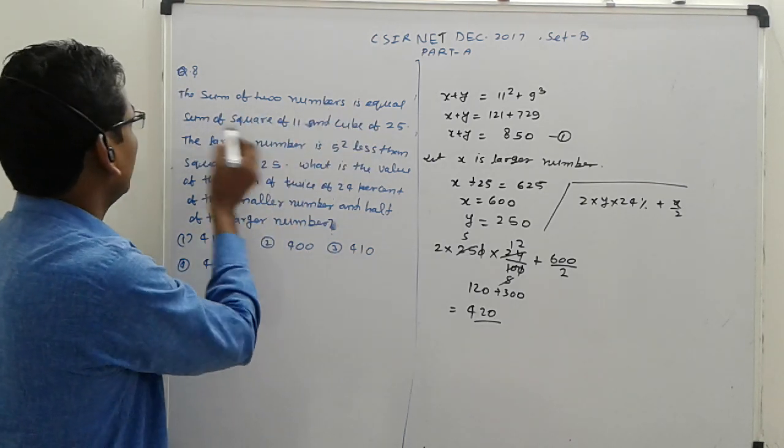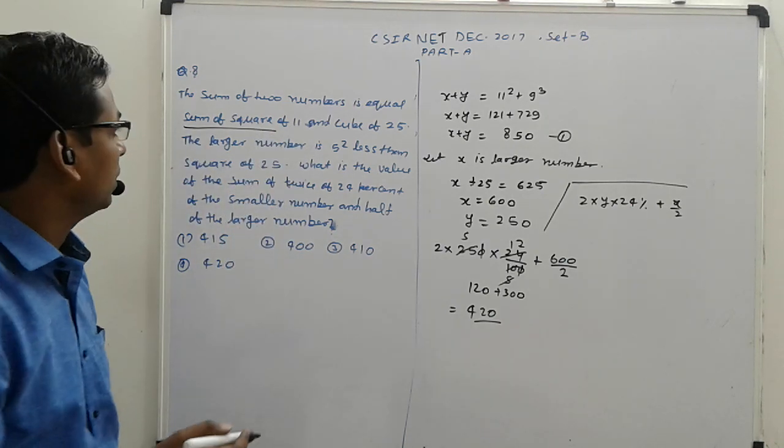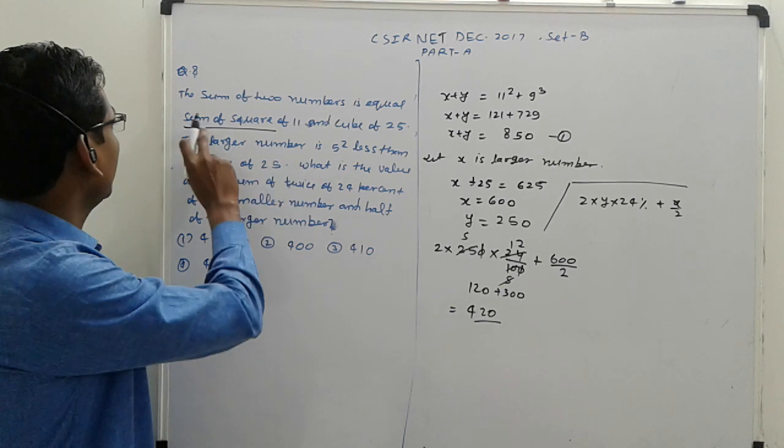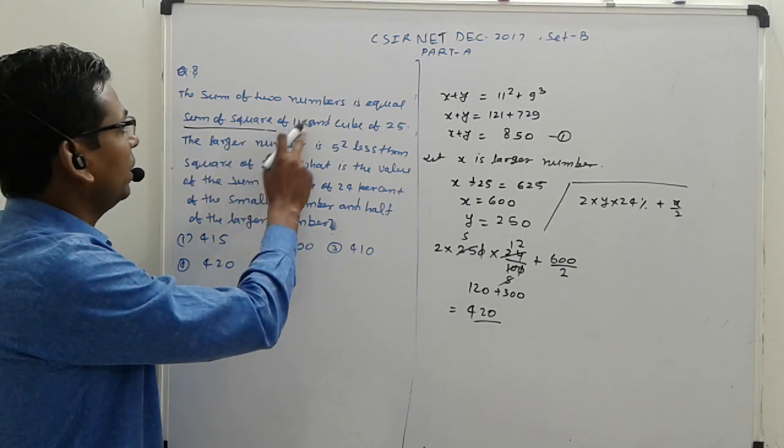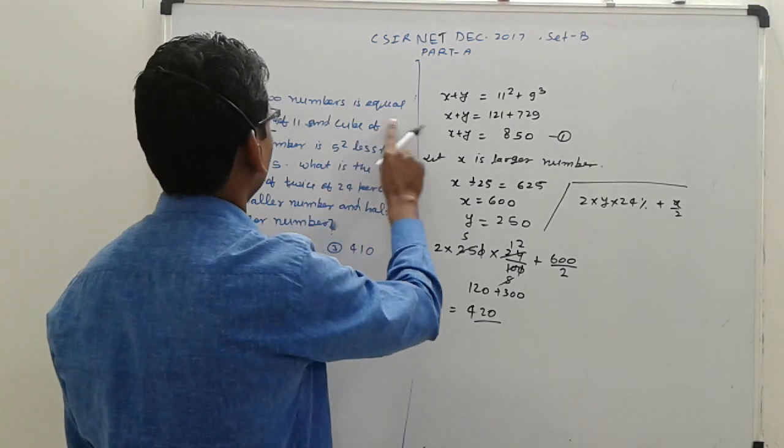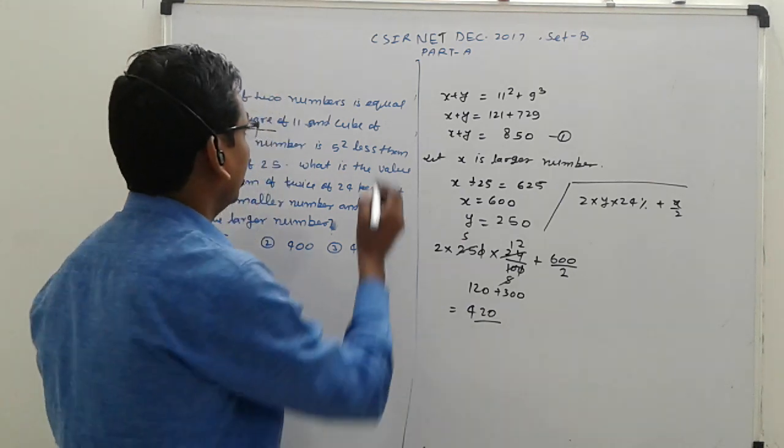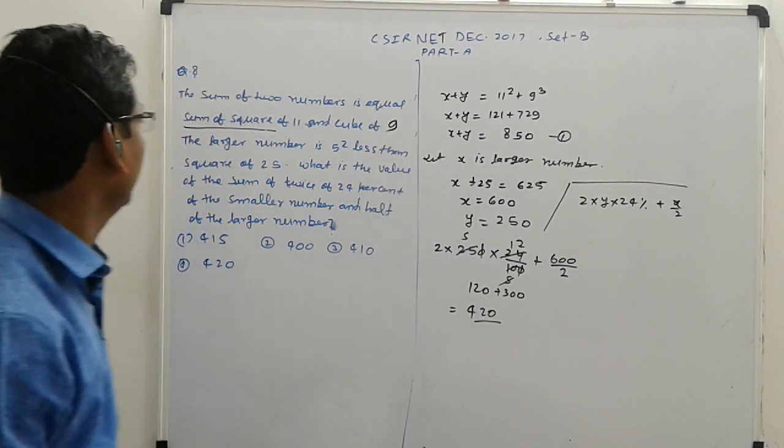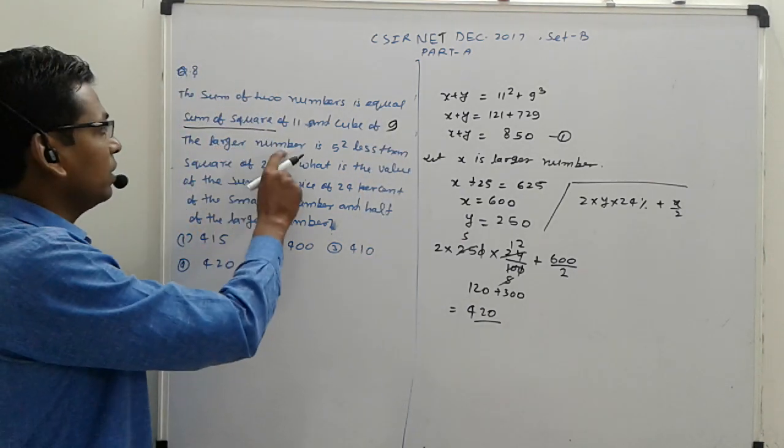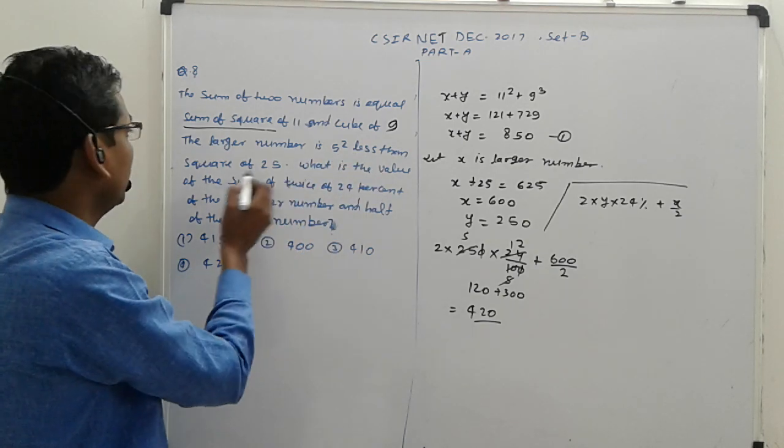The sum of two numbers is equal to the square of 11 plus the cube of 9. That's 11 squared plus 9 cubed. The larger number is 5 less than the square of 25.